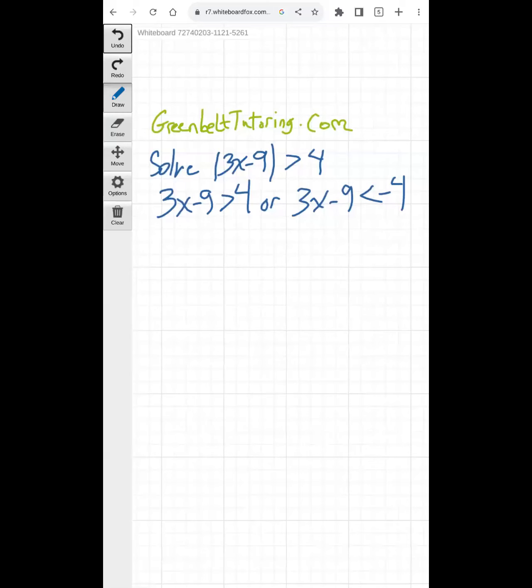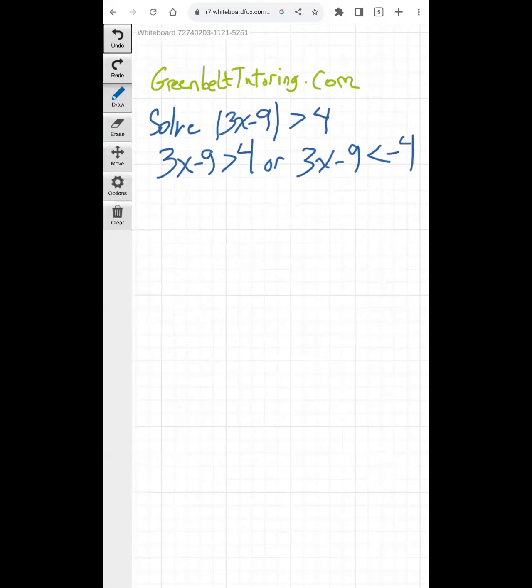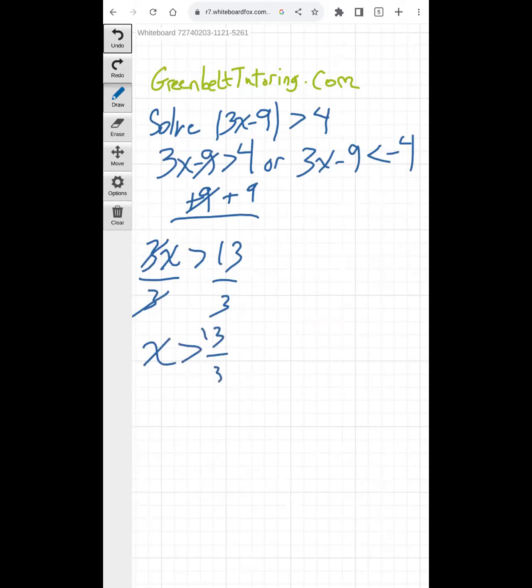And now to solve, you treat it as if it were an equation. You get x by itself on each side of the inequality. So for the inequality on the left, we add 9 to both sides of the inequality. Minus 9 plus 9 equals 0. We're left with 3x is greater than 4 plus 9 equals 13. And then divide both sides of the inequality by 3. We're left with x is greater than 13 over 3.